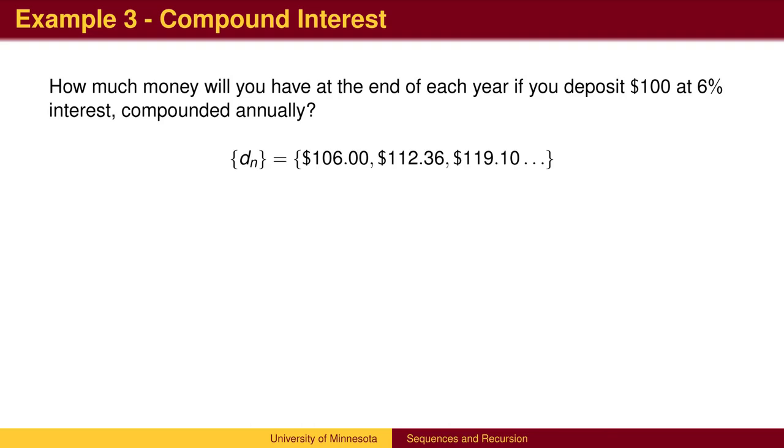To get the amount of money after 1 year, we multiply our initial investment of $100 by 6%, earning $6 of interest, which is added to the $100 to give us $106. We then add 6% of $106 to get our account balance at the end of year 2.